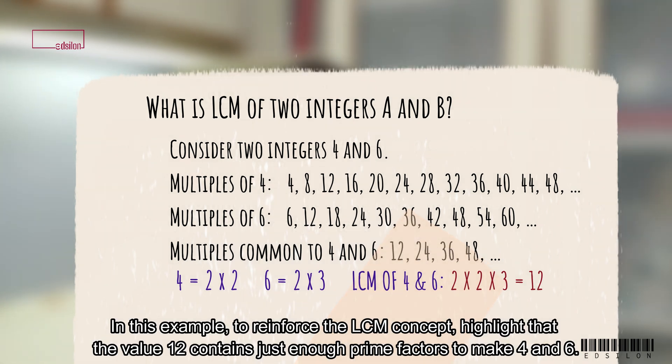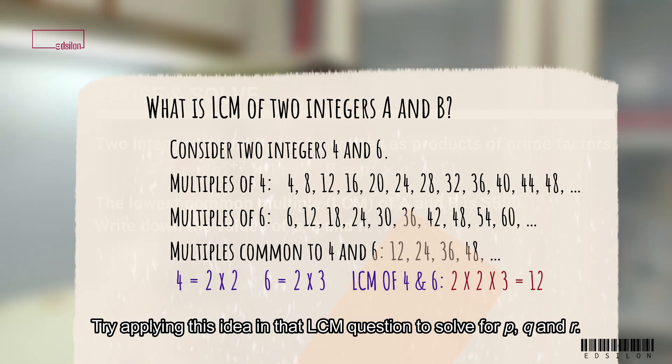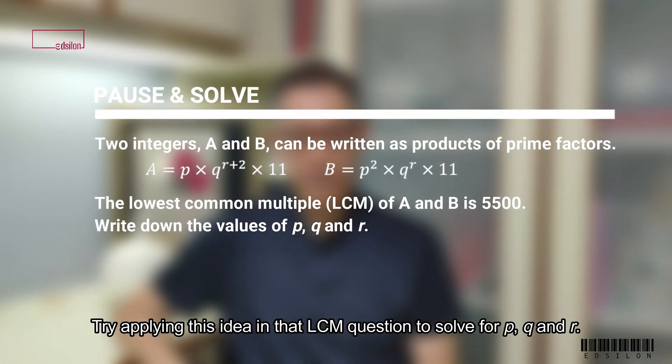In this example, to reinforce the LCM concept, highlight that the value 12 contains just enough prime factors to make 4 and 6. Try applying this idea in the LCM question to solve for P, Q and R.